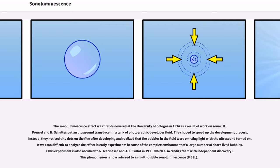H. Frenzel and H. Schultz put an ultrasound transducer in a tank of photographic developer fluid. They hoped to speed up the development process. Instead, they noticed tiny dots on the film after developing and realized that the bubbles in the fluid were emitting light with the ultrasound turned on. It was too difficult to analyze the effect in early experiments because of the complex environment of a large number of short-lived bubbles. This phenomenon is now referred to as multi-bubble sonoluminescence.